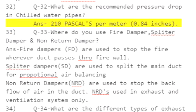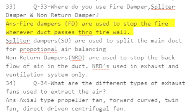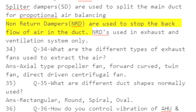Q32: What are the recommended pressure drops in chilled water pipes? Answer: 210 pascals per meter (0.84 inches). Q33: Where do you use fire damper, splitter damper, and non-return damper? Answer: Fire dampers (FD) are used to stop fire wherever duct passes through a firewall. Splitter dampers (SD) are used to split the main duct for proportional air balancing. Non-return dampers (NRD) are used to stop the back flow of air in the duct; NRDs are used in exhaust and ventilation systems only.